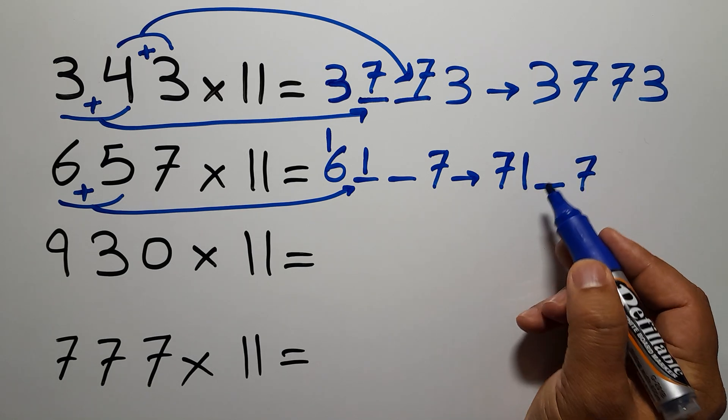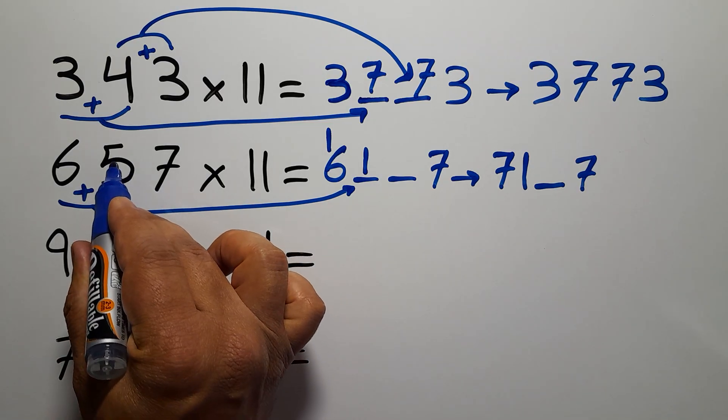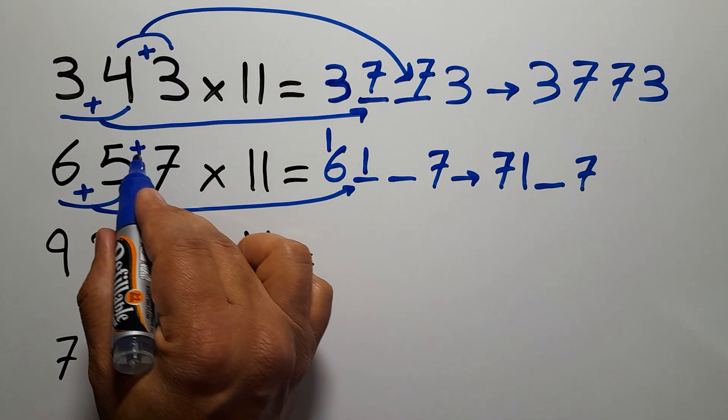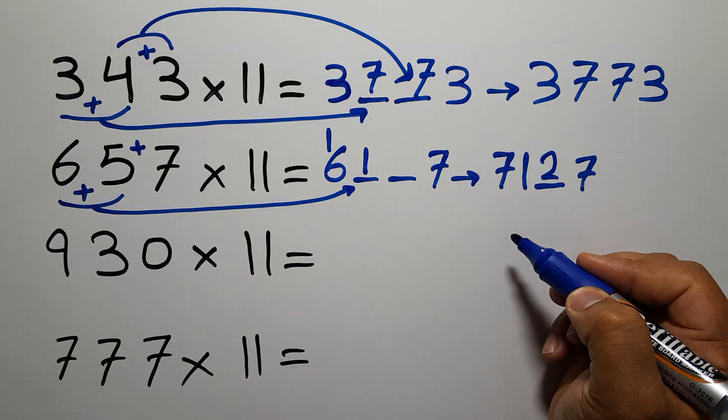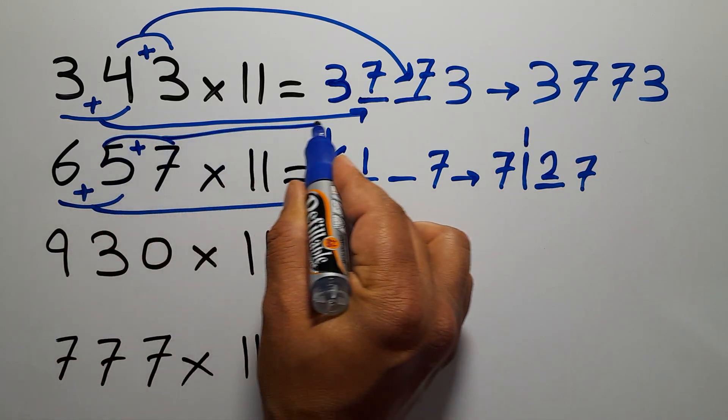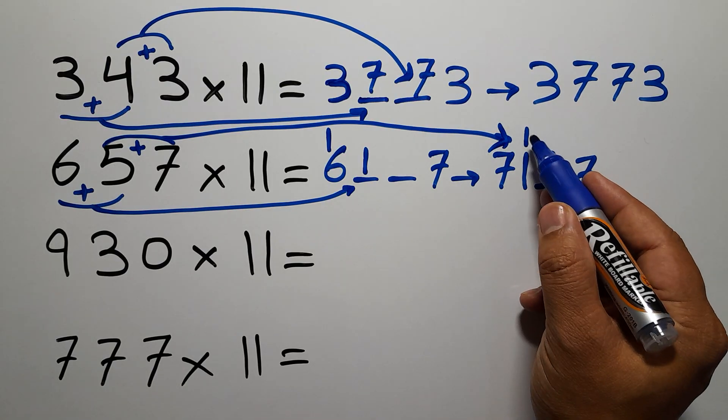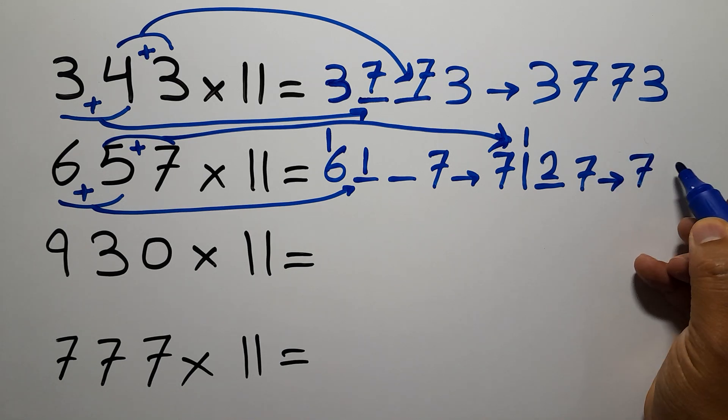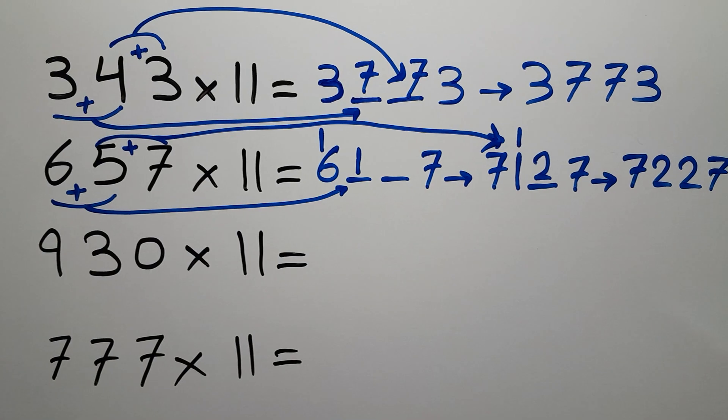To fill this blank space, we add the last two digits, 5 and 7, which gives us 12. So we write 2 here and carry 1 here. 1 plus 1 gives us 2, so our answer is 7227.